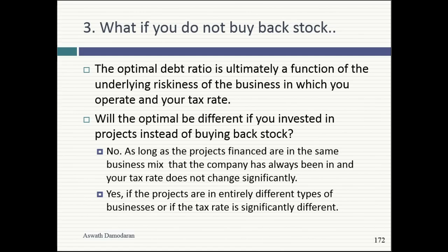The easy answer first: your optimal will stay unchanged if you stay in the same business and just expand it. Disney's breakdown was 49% broadcasting, 36% something else. If you're just expanding your existing business, cash flows will expand proportionally, and you can keep the 40% optimal. But what if Disney said they'd like to borrow money and buy Twitter?